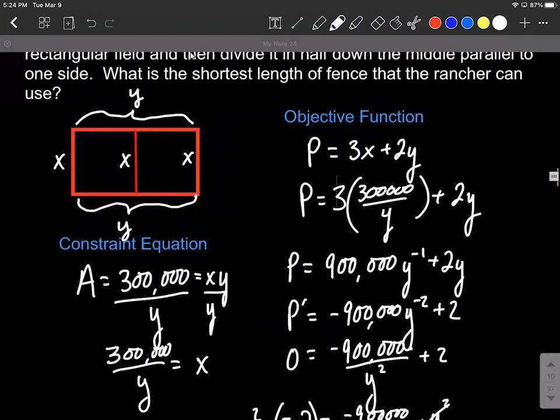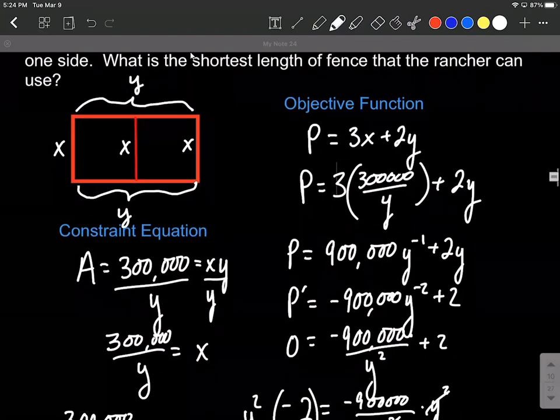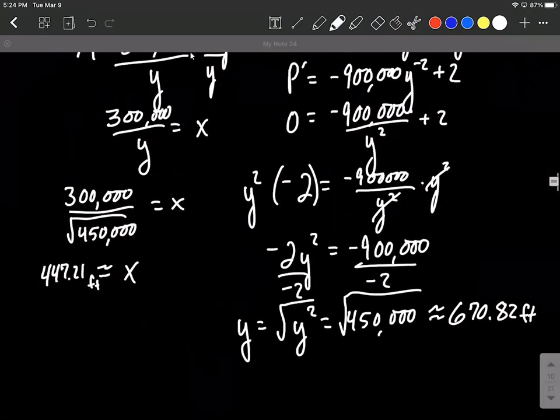So the shortest length of fencing that we can use is if we plug back into our objective function and get the actual perimeter. That was what we set up to add together all of these lengths of fencing.